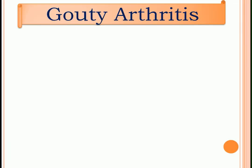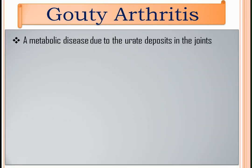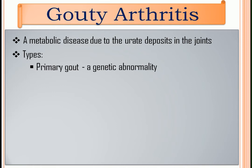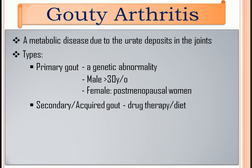Let's now proceed to gouty arthritis. It is a metabolic disease due to urate deposits in the joints, causing a painfully arthritic joint. Types: First, we have primary gout — a genetic abnormality common to men from 30 to 50 years of age and to postmenopausal women. Secondary or acquired gout originates from drug therapy, diet, or from metabolic causes that are not genetic in nature. It is common to elderly patients.